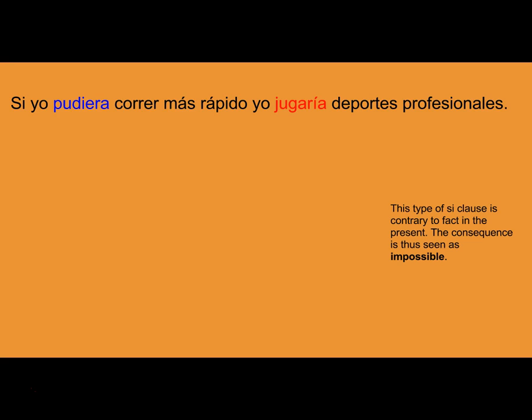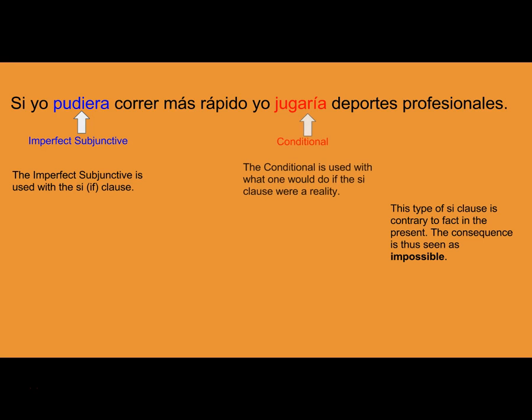If I could run faster — the 'if' part of an if-statement using the conditional and the imperfect subjunctive is always going to be conjugated in the imperfect subjunctive. What you would do, or what one would do, is always going to be in the conditional.